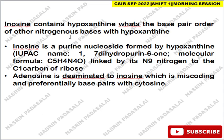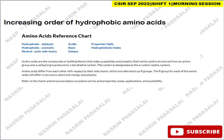Inosine contains hypoxanthine as its base. Inosine is a purine nucleoside linked by N9 nitrogen to the C1 carbon of ribose. Adenosine is deaminated to inosine, which is a miscoding base. Inosine base-pairs with cytosine.